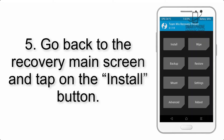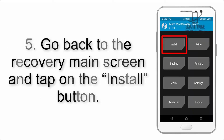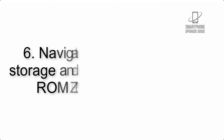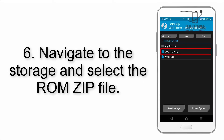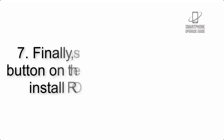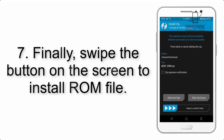Step 4: Swipe the button to wipe the device. Step 5: Go back to the recovery main screen and tap on the Install button. Step 6: Navigate to the storage and select the ROM zip file.